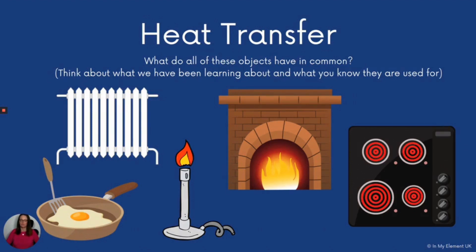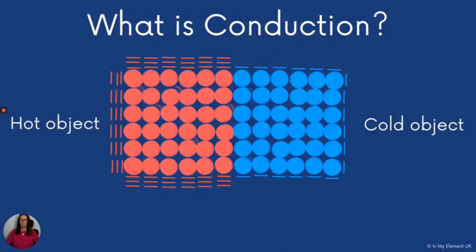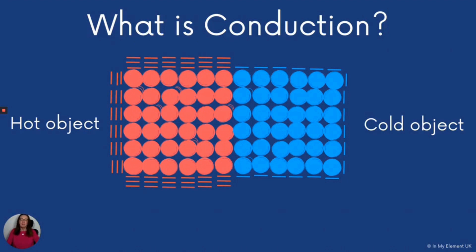One of the ways heat transfer happens is through conduction. When an object is heated, the particles begin to vibrate as they gain energy in their kinetic energy store. These little lines here represent energy, showing that those particles have more energy. The two objects must be touching, and as the vibrating particles touch, they pass the energy on to the closest particles near them. The particles in the hotter object vibrate faster, so when they touch, the energy is transferred.